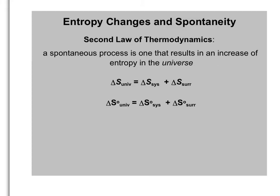Now I want to look at a second way of determining the change in entropy of a system. This method relates entropy changes to the spontaneity of a chemical reaction — will a chemical process happen spontaneously? We can predict that by looking at the second law of thermodynamics, which states that a spontaneous process results in an increase in the entropy of the universe. The change in entropy of the universe is the sum of the change in entropy of the system and the change in entropy of the surroundings — system plus surroundings equals everything, or the universe.